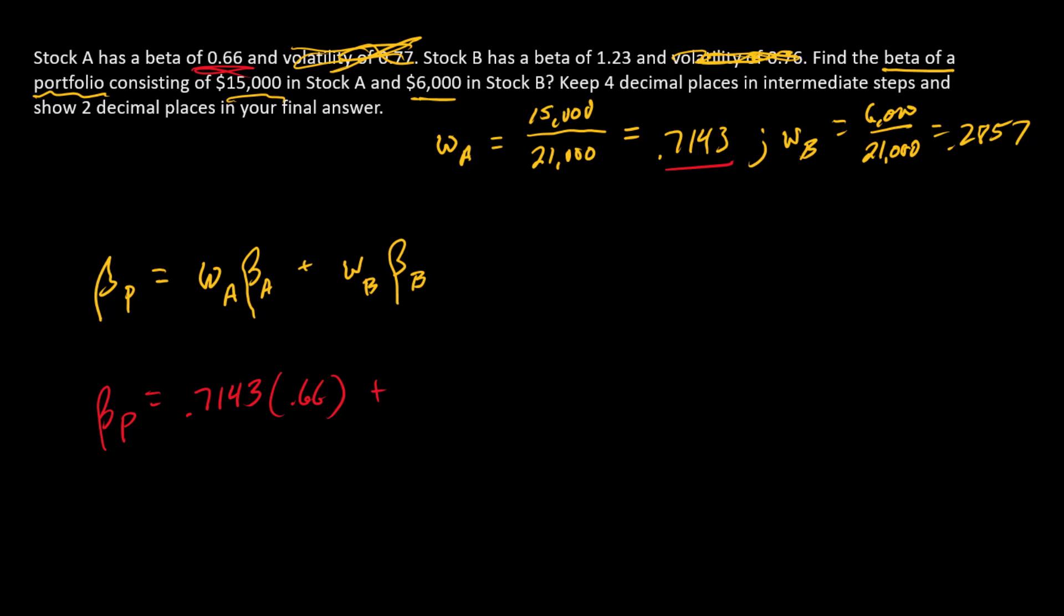Then dealing with the second component, we need 0.2857, so that's stock B's weight, multiplied by stock B's beta of 1.23. And our portfolio beta is 0.8228.